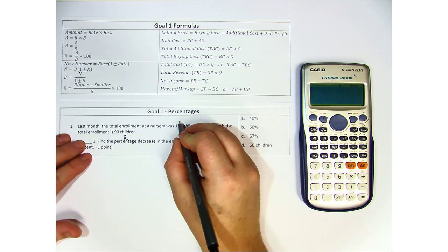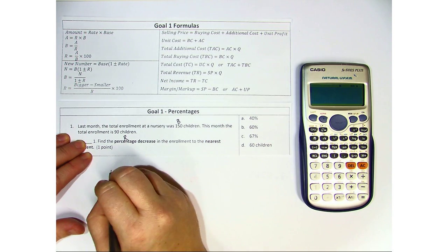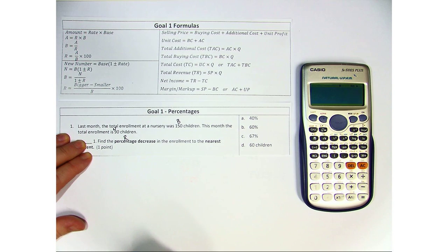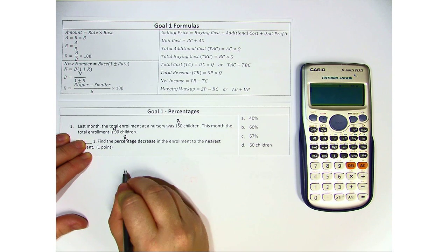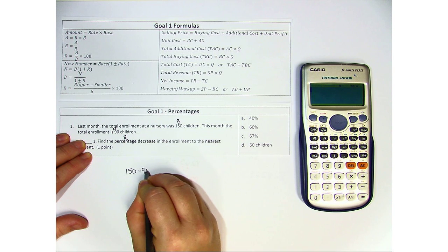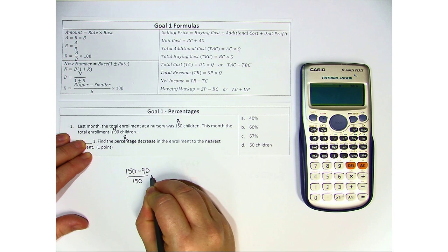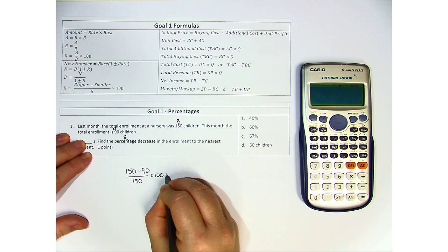The original number was 150, however it has since changed to 90. So the bigger number is 150, the smaller number is 90, and the original amount was 150 students. We have to multiply by 100 to make it a percent.